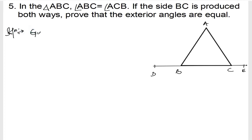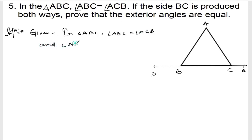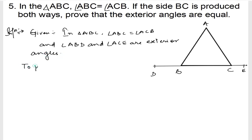Solution. Given: in triangle ABC, angle ABC is equal to angle ACB, and angle ABD and angle ACE are exterior angles. To prove: exterior angle ABD is equal to exterior angle ACE — this angle and this angle must be equal.